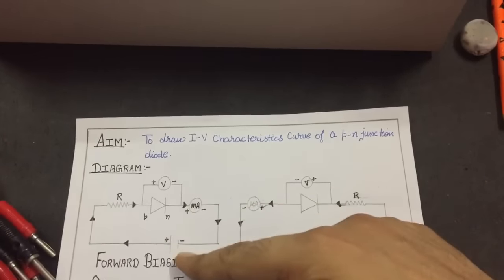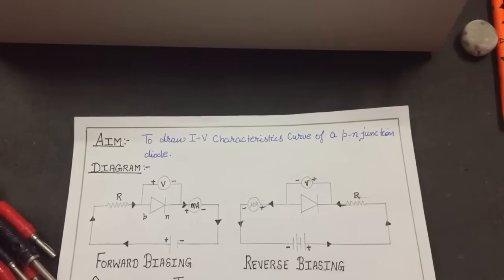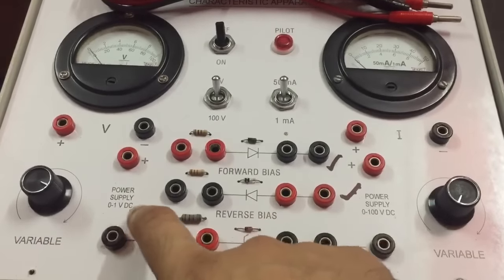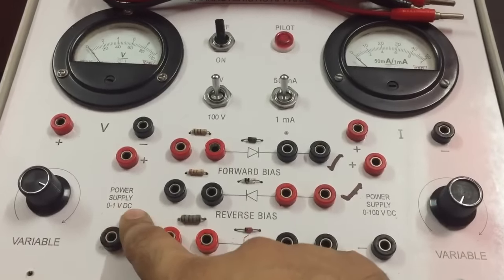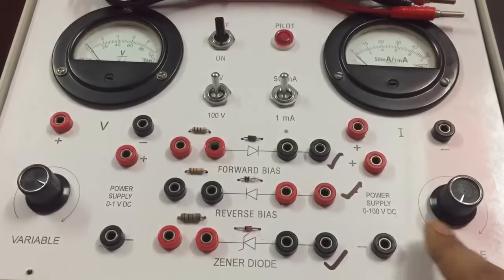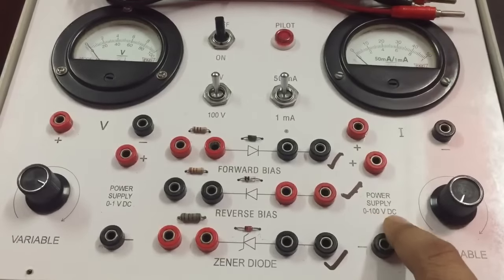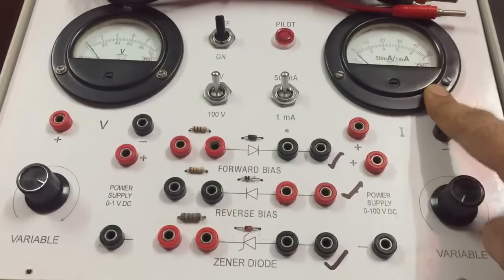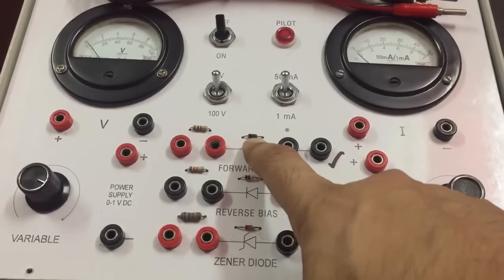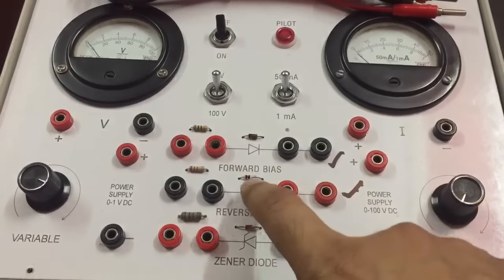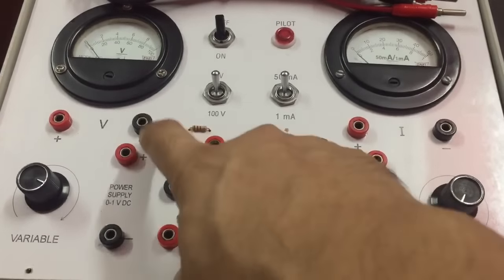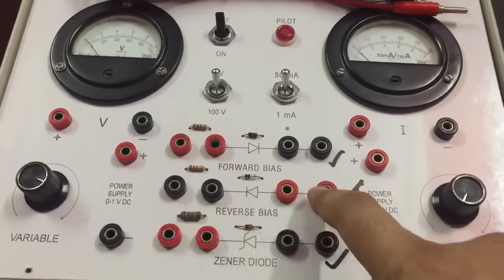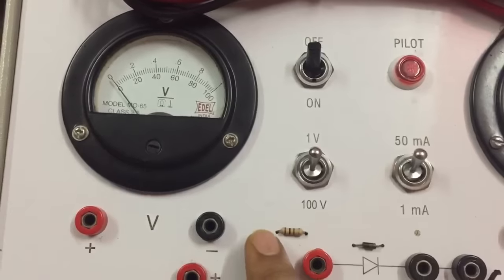First we'll do forward biasing. In this kit, you can see there is a power supply for 0 to 1 volt, and here we have another power supply with 0 to 100 volt DC. This is a voltmeter, this is an ammeter, and here is the p-n junction diode. We will use the upper part for connecting it in forward bias and the middle part for reverse biasing.